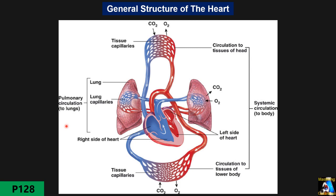The heart is a muscular pump and the main part of the cardiovascular system. It can be divided into two sides — left side and right side — each with two chambers: atrium and ventricle. The left side is involved with systemic circulation and the right side with pulmonary circulation.